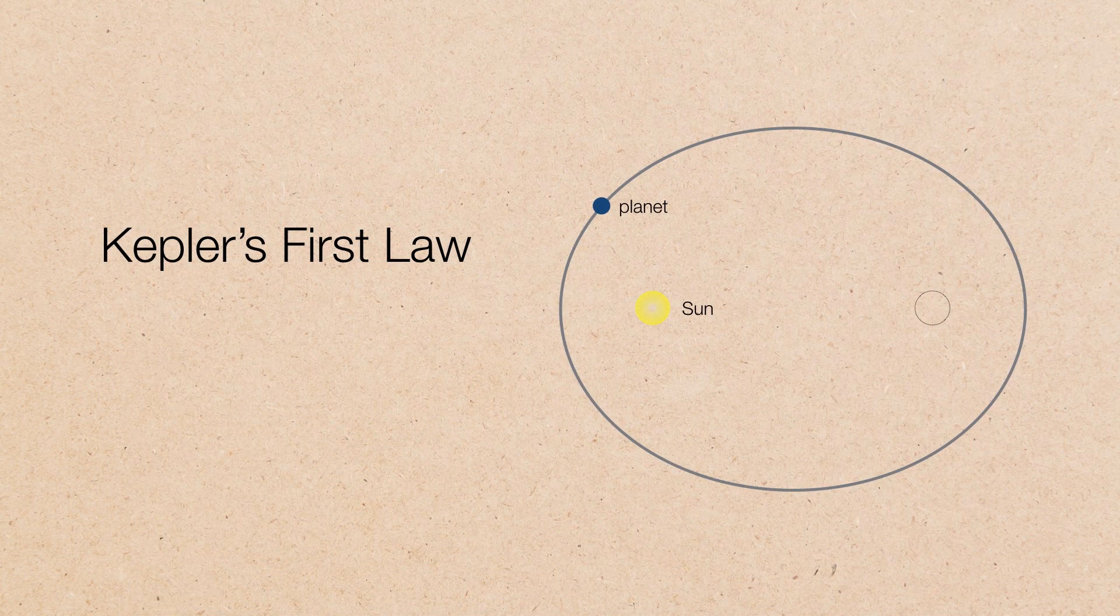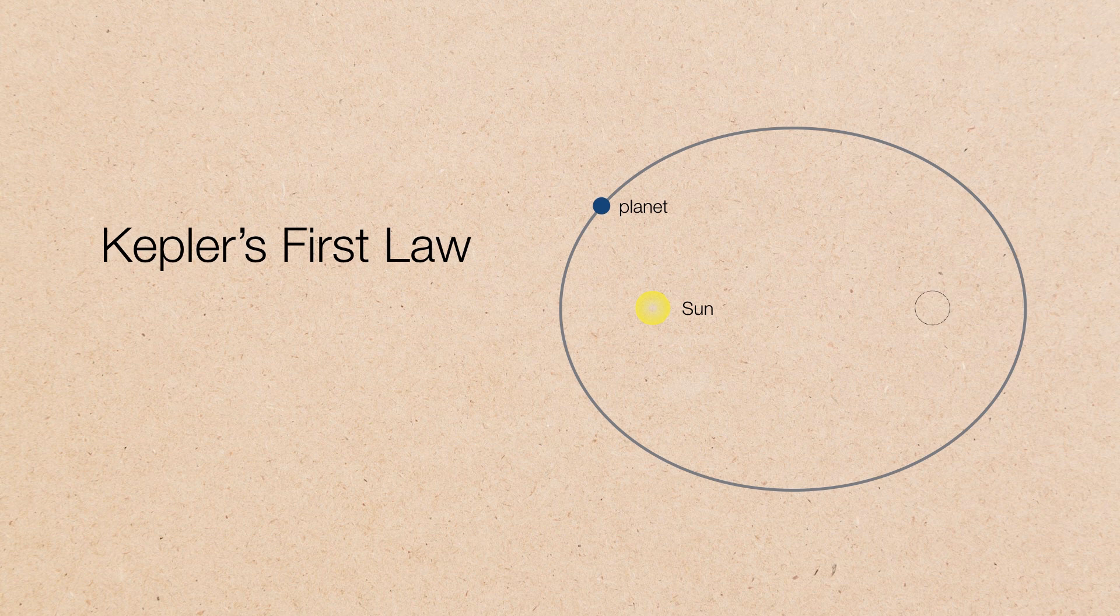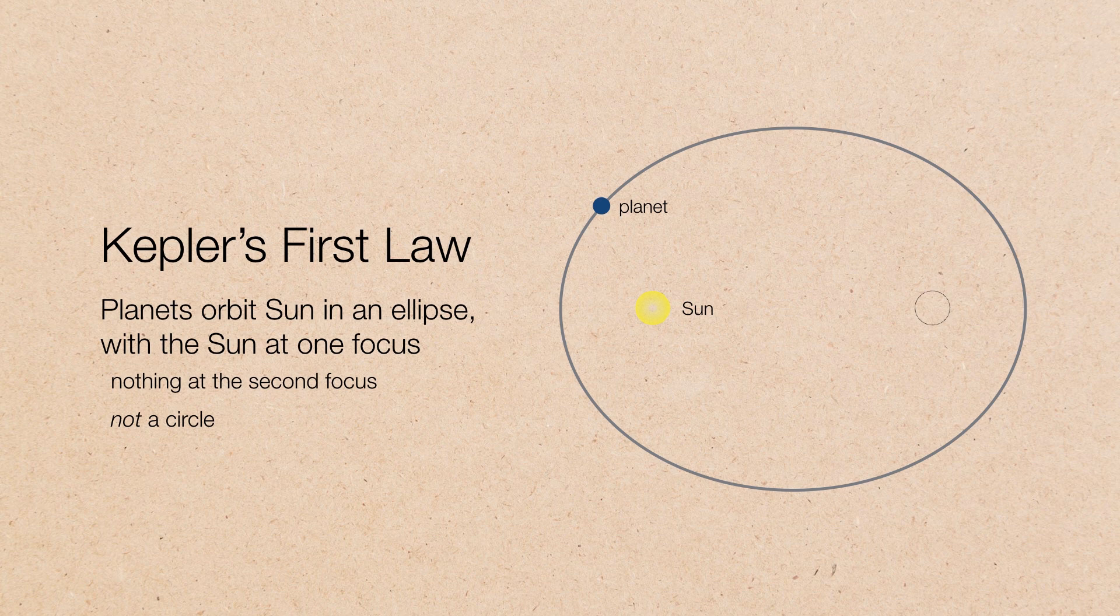Kepler's first law is this. Rather than a circle, a planet orbits the sun in an ellipse, with the sun at one focus and nothing at the second focus.